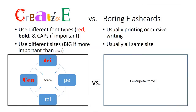Creative flashcards use different font types, such as red color, bold, and capital letters if the content is important. Also use different font sizes — big if it's more important, small if less so. In this example, you see centripetal force shown as a picture with 'century' in bold red font.